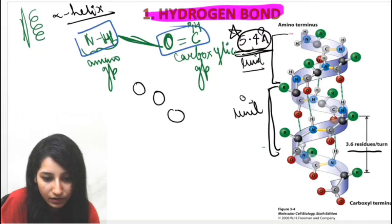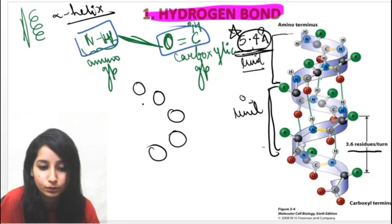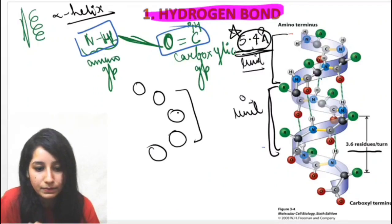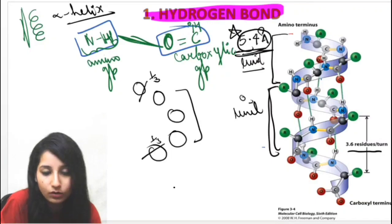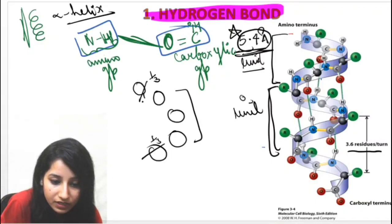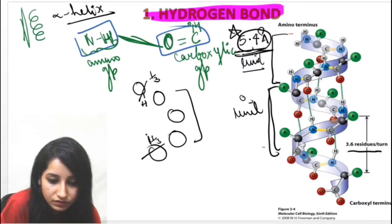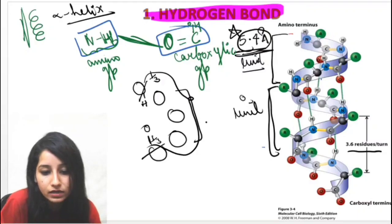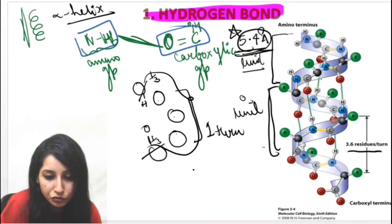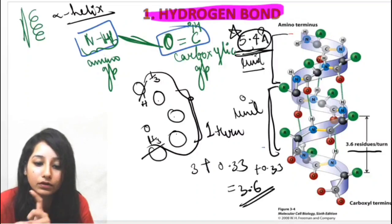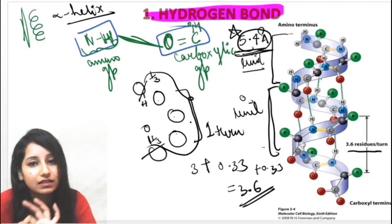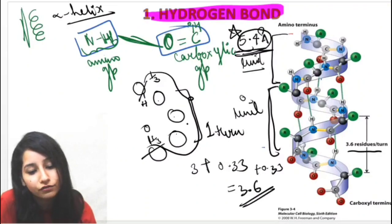To understand how 3.6 residues per turn is derived: consider amino acids N, N+1, N+2, N+3, and N+4. Three complete amino acids are present in the turn, plus one-third of the Nth amino acid (containing the N-H group) and one-third of the N+4th amino acid (containing the oxygen group). So 3 + 0.33 + 0.33 = 3.66 amino acids, giving approximately 3.6 residues per turn.